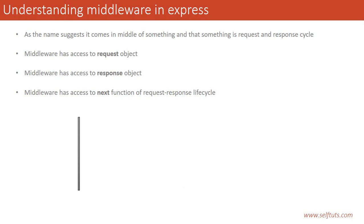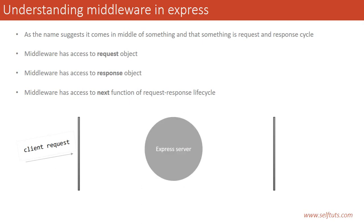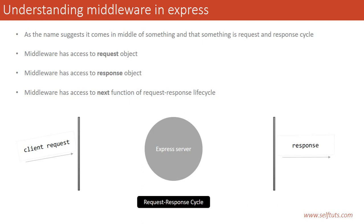Suppose this is the entry point of our Express web server where the client sends the request, and this is the exit point from where the web server returns a response. The Express server is just like a black box which does some processing — it contains both Express's code and your business logic. Every client request comes in, the black box evaluates it, accesses parameters, does some database work, and then returns the response. This is the request and response cycle of a web server, seen as a single entity.